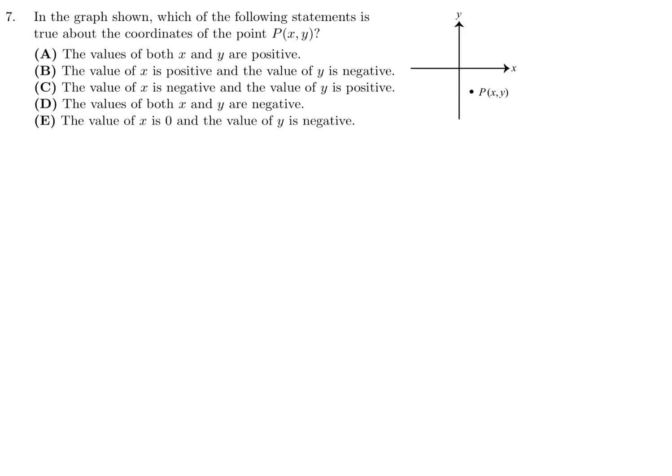In the graph shown, which of the following statements is true about the coordinates of the point P (X, Y)? If you are going in that direction, it's positive. So X is positive. I'm pretty confident about that. If you're going down here below the X-axis while you're on the Y-axis, the Y is negative. So Y is negative. And that's really all they're looking for. From the answer choices, the one that matches is B for number 7.